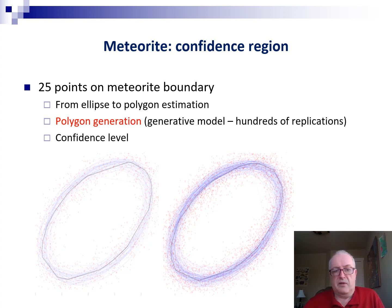So now let's dig into the details of the problem about the meteorite. You have 25 points observed on the boundary of the meteorite. So it kind of gives you a hint about the shape of the meteorite, which is approximated by an ellipse here.